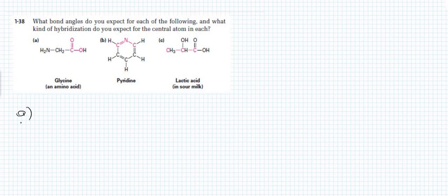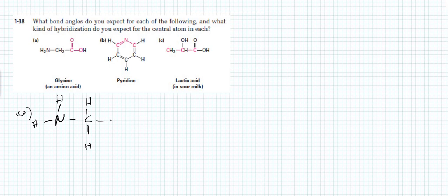In order to solve this part you need to be able to write a detailed line bond structure. The first atom is nitrogen — nitrogen has two hydrogens. Then we have a carbon atom with two hydrogens connected to another carbon atom. This carbon atom has a double bonded oxygen and a single bonded oxygen, and that oxygen is connected to hydrogen.